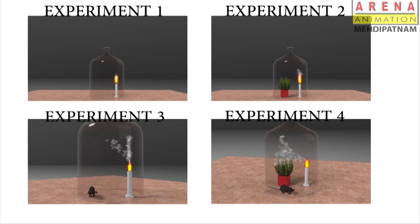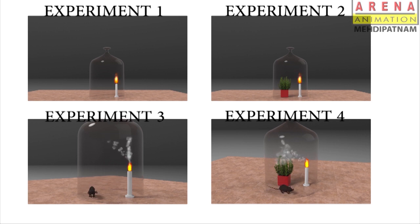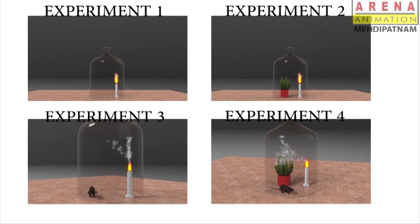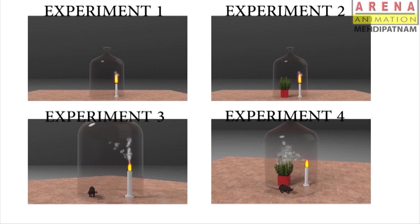By all the above experiments, we come to the conclusion. In experiments 1 and 3, due to lack of oxygen, the burning candle was extinguished and the rat died. But in experiments 2 and 4, the mint plant released oxygen through photosynthesis, while taking in the carbon dioxide released by the burning candle. So the candle kept burning without interruption, and the rat lived happily.